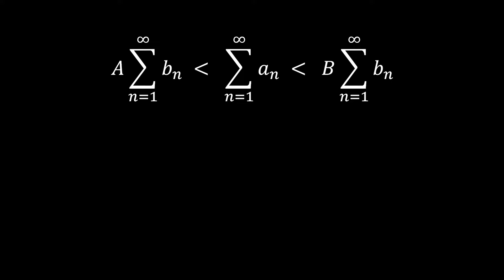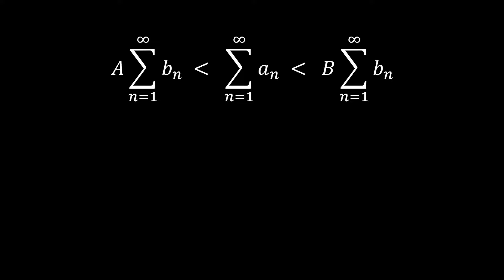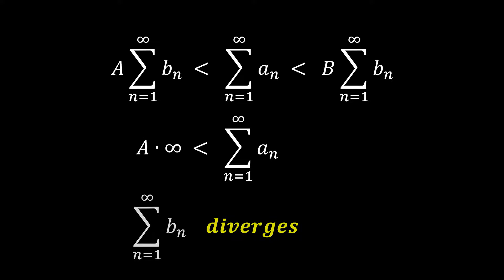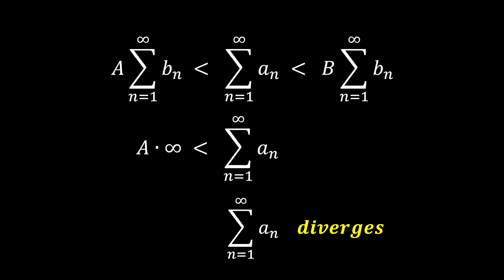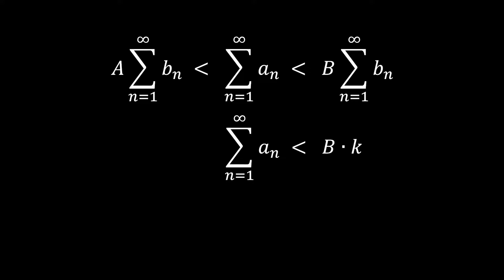We'll now use the direct comparison test learned in a previous video to prove the limit comparison test. I recommend watching the direct comparison test video, the link to which is provided in the upper right corner. Let's assume that the sum of b sub n on the left diverges to infinity. Then the left side becomes A times infinity, which diverges to infinity. Consequently, the sum of a sub n must be greater than infinity, leading to divergence. Now, let's assume that the sum of b sub n on the right converges to some positive constant value k. Then the right side of the inequality becomes capital B times k. The sum of a sub n must be smaller than the constant value B times k, indicating convergence.